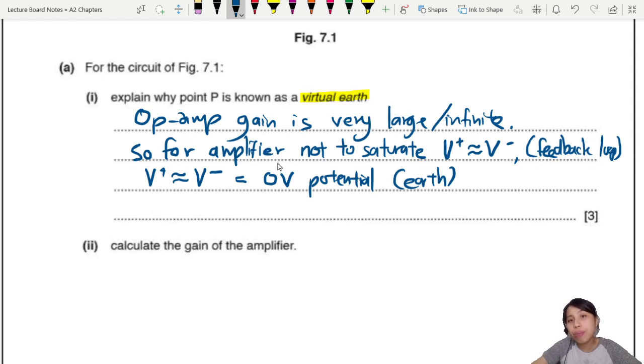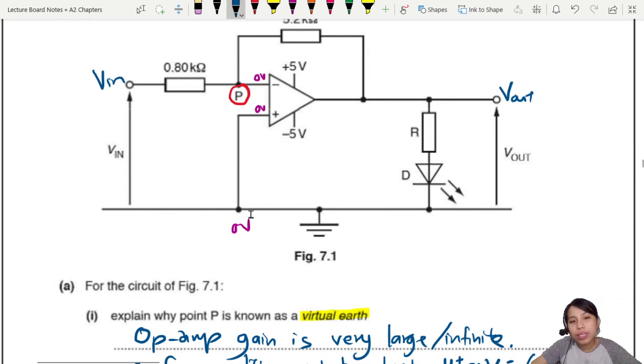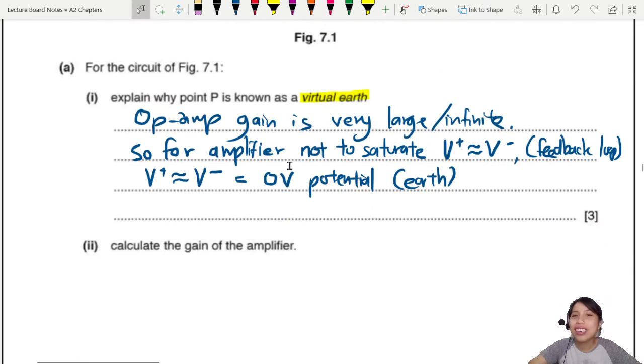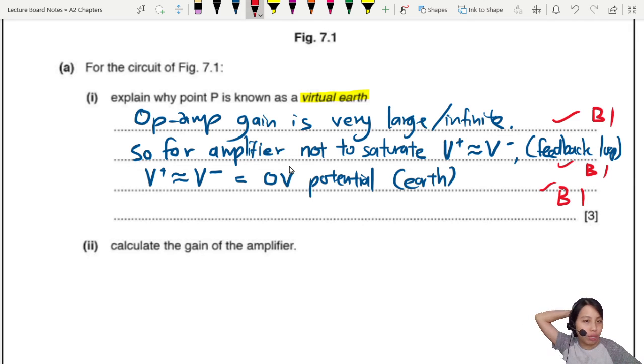Because one of the inputs is already at earth, zero volts, the other one also tries to adjust to be roughly zero volts. Then only your op-amp can function properly like an amplifier and not just output infinity or negative infinity. It's only got three marks - one mark for each of these points. Calculate the gain of the amplifier.